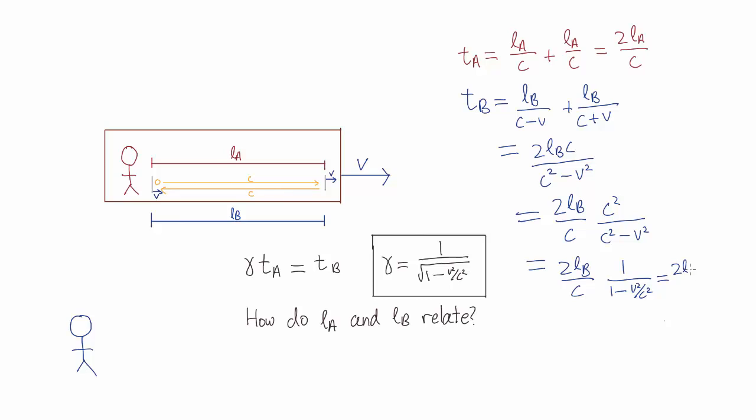That second term there we can write as gamma squared. So we have an expression for tA in red, an expression for tB in blue, and a relation between tA and tB in black. See if you can combine these three.